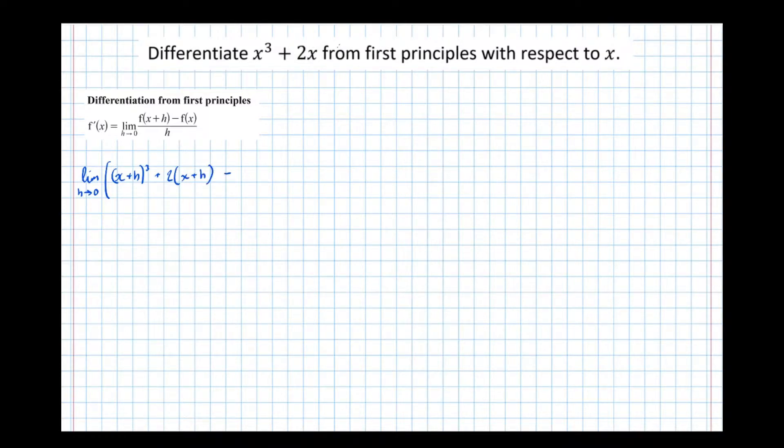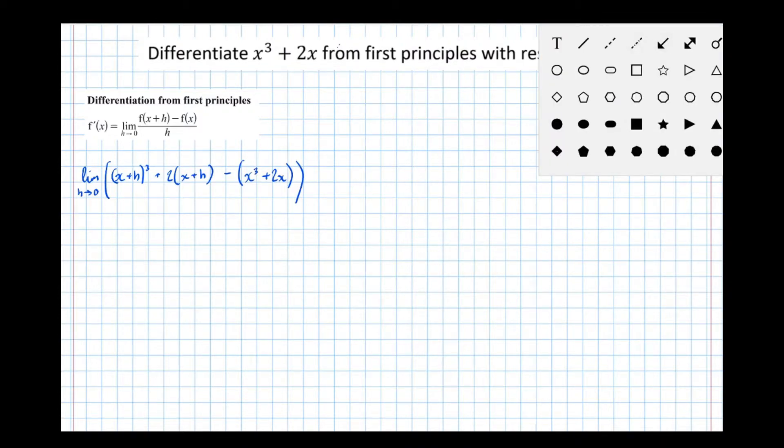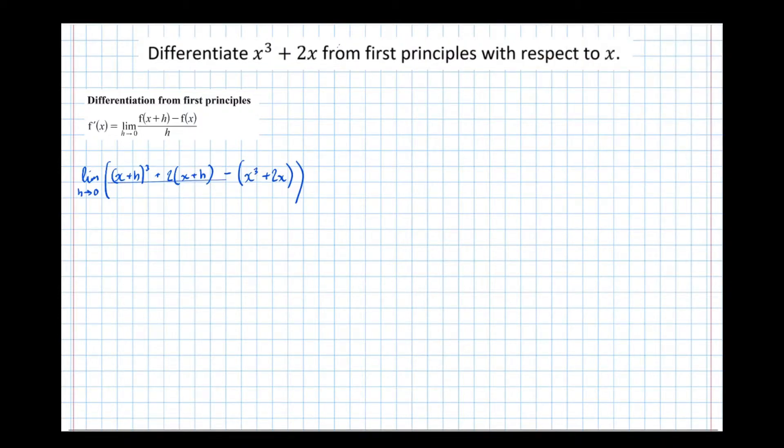Then we're taking away the expression where just x is subbed in, so take away all of x cubed plus 2x, close bracket, and then the denominator is just h.